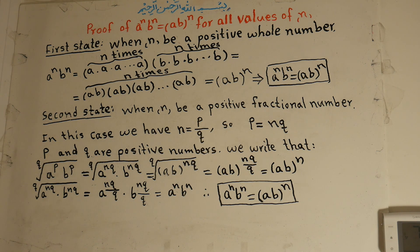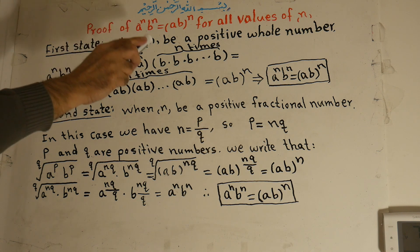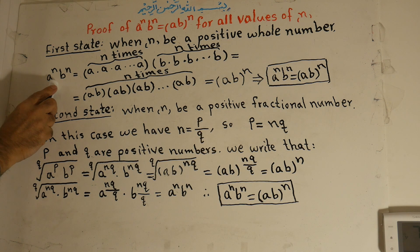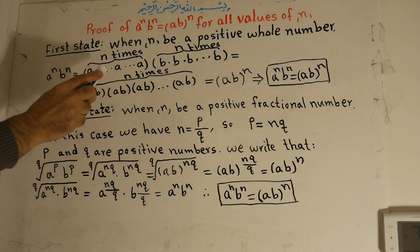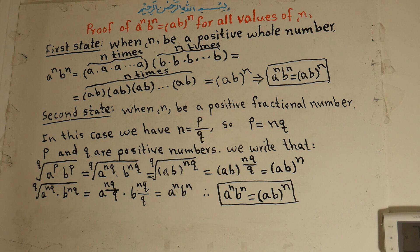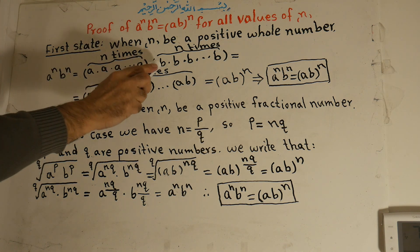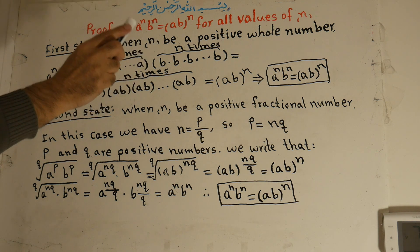First case: when n is a positive whole number. Then a to the power of n times b to the power of n is equal to a times a times a times a, n times — meaning a multiplied many times — all times b times b times b times b times b, n times.